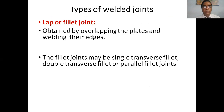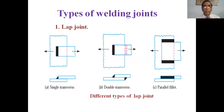Types of welding joints — lap or fillet joints are formed by overlapping the plates and welding their edges. The fillet joints may be single transverse fillet, double transverse fillet, or parallel fillet joints. For single transverse, welding is done on the top of the plate. For double transverse, both sides are welded. And C is the parallel fillet type.